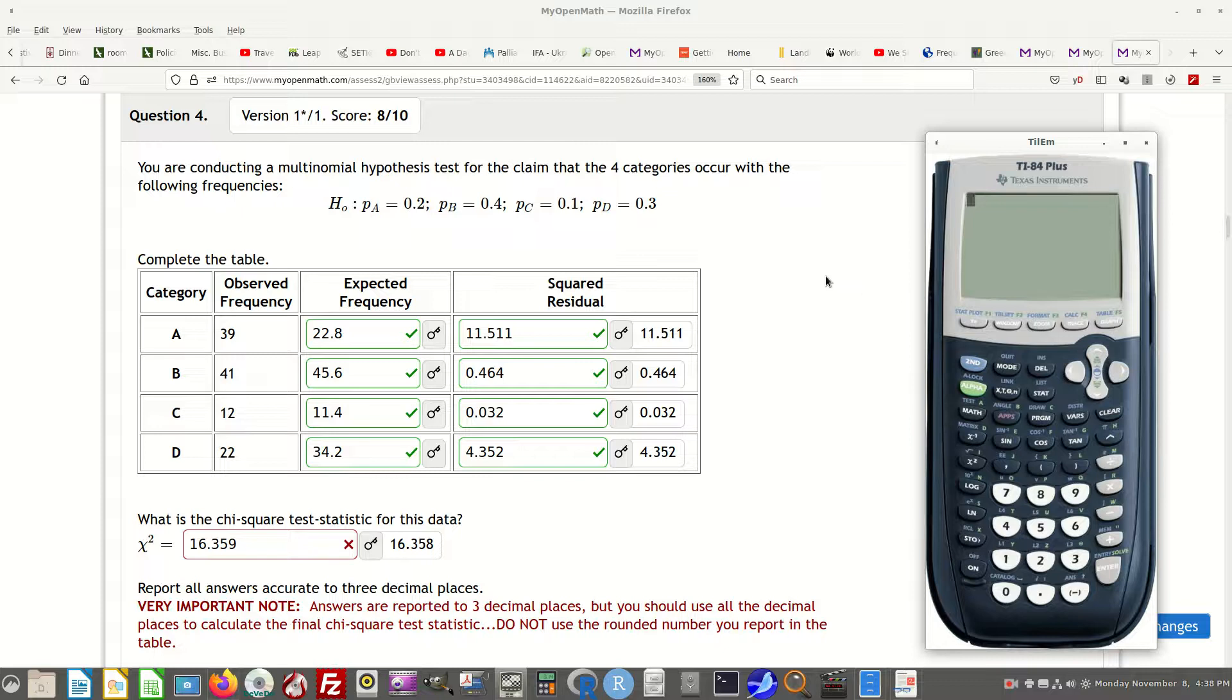This one is weird in the sense that it allows you to round certain things, but not other things. So this is how I got the chi-squared result for this question.